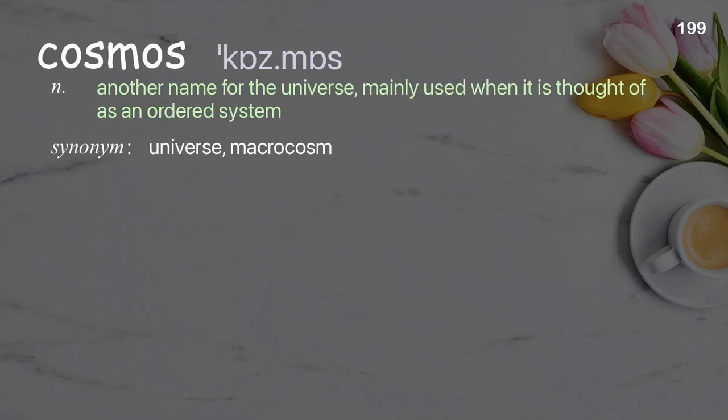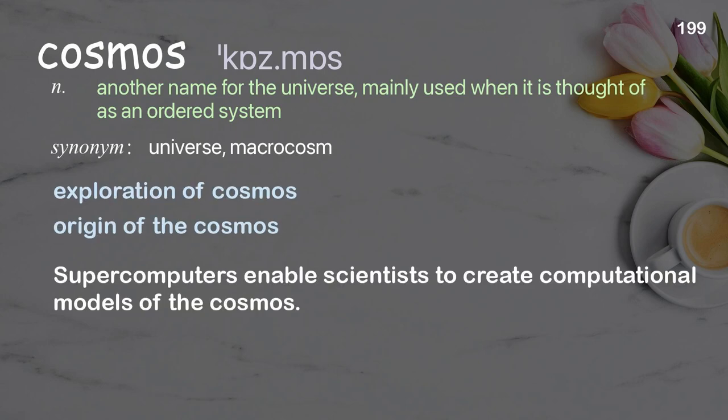Cosmos. Another name for the universe, mainly used when it is thought of as an ordered system. Examples: exploration of cosmos, origin of the cosmos. Supercomputers enable scientists to create computational models of the cosmos.